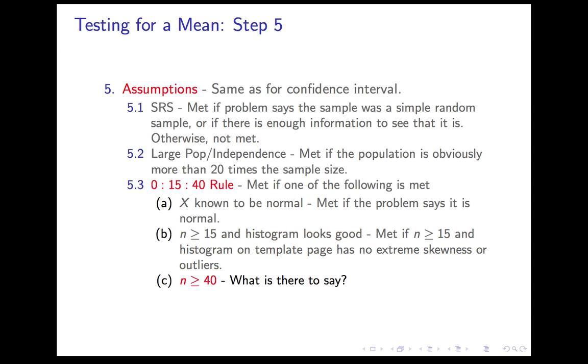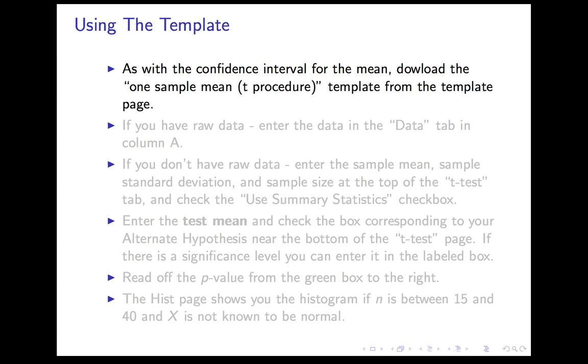In our case, my sample was a convenient sample, so that's not met. My population, surely there's more than 100 bags of Doritos. That's fine. And since n is less than 15, I would have to know the weights of Doritos bags follows a normal distribution. No reason to think that.